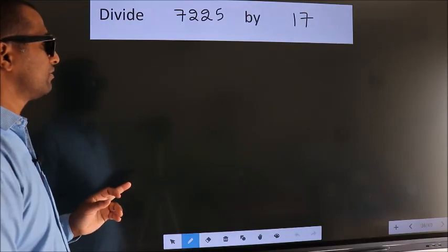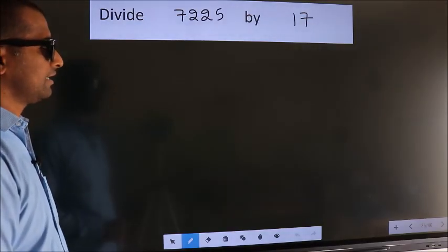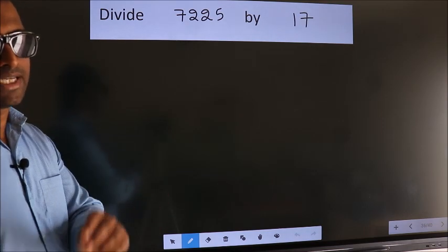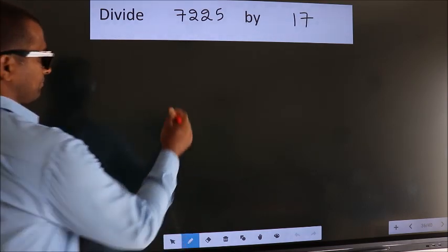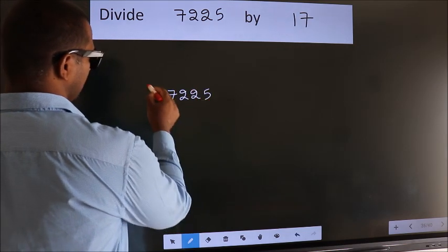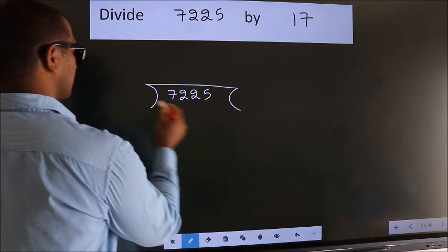Divide 7225 by 17. To do this division, we should frame it in this way: 7225 here, 17 here.